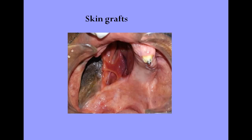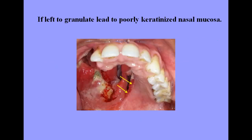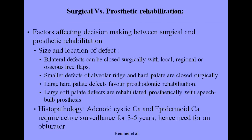Incorporation of skin graft is very important because it will make the tissue in contact with the prosthesis more resistant. Apart from that, it will prevent granulation of the resected margin. Once it starts granulating, it will lead to poorly keratinized nasal mucosa which is not resistant, and it will affect the prognosis of the prosthesis.